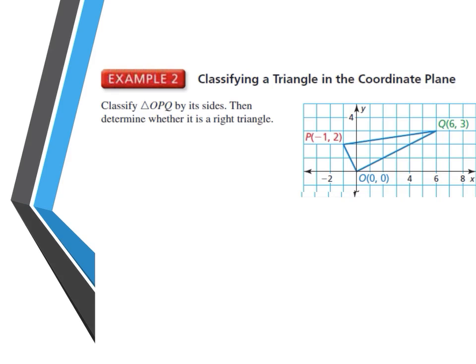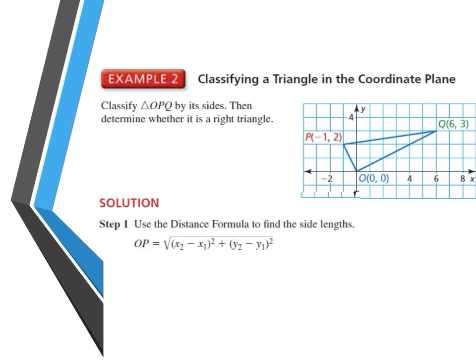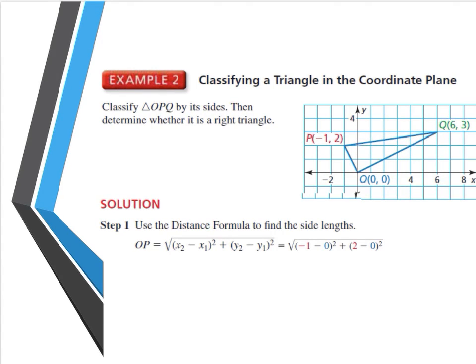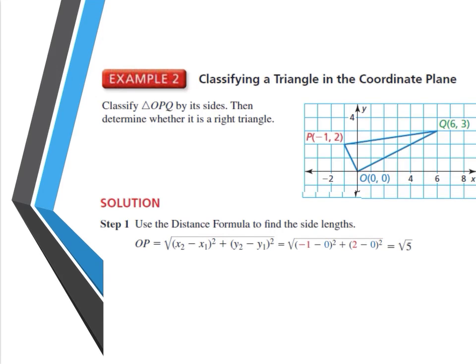We need to find the length of each side, so we'll set up our equations starting with side OP. Using the distance formula and substituting the coordinates — P is at negative one, two and O is at the origin, zero, zero — we get the square root of (negative one minus zero) squared plus (two minus zero) squared, which simplifies to the square root of 5, approximately 2.2.